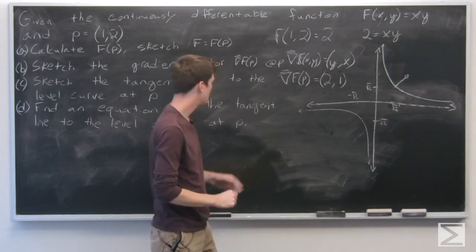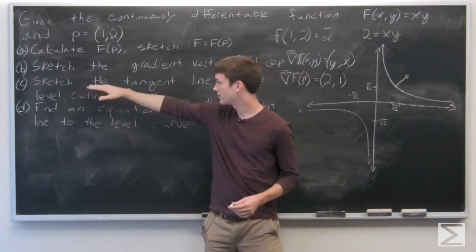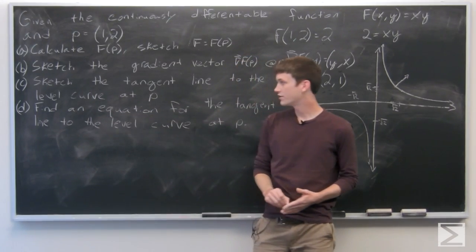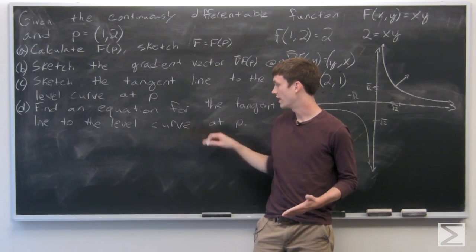And now we want to sketch the tangent line to the level curve at p and find an equation for the tangent line to the level curve at p.